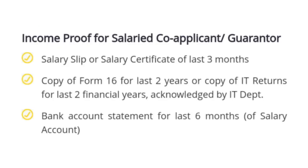For income proof for a salaried co-applicant or guarantor, they need to submit salary slips or salary certificate for the last three months, copy of Form 16 for the last two years or copy of IT returns for the last two financial years acknowledged by the IT department, and bank account statement for the last six months of their salary account.